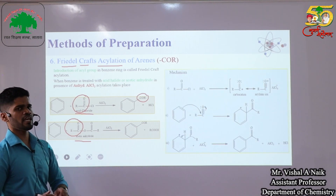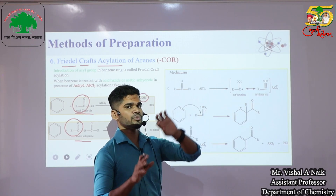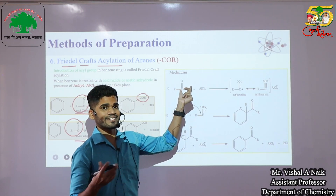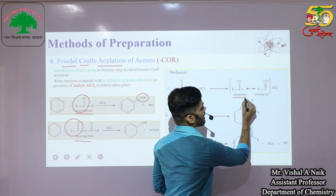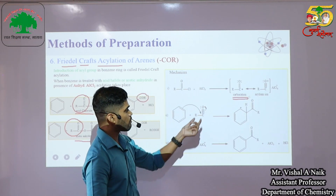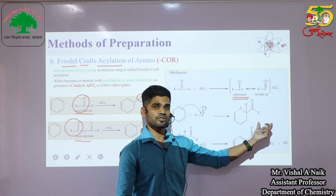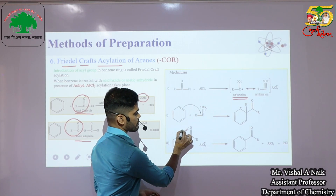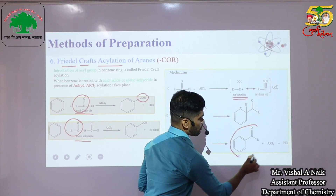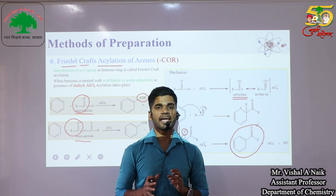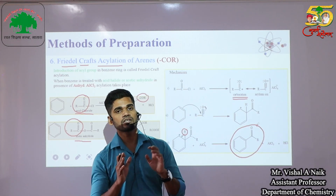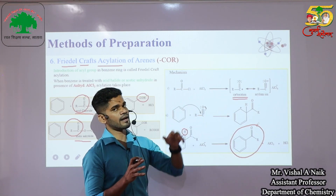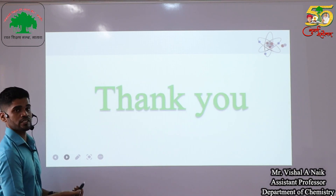The mechanism of Friedel-Crafts acylation is the same as Gattermann-Koch formylation — only the first step differs. Here, an acyl chloride or acetic anhydride reacts with AlCl₃ to generate an acylium cation as the electrophile. This reacts with the benzene ring to give a cation; AlCl₄⁻ then abstracts the proton, and aromaticity is restored to give the acylated aromatic compound. The key difference from Gattermann-Koch is the starting material: acyl chloride or acetic anhydride instead of CO and HCl. Thank you.